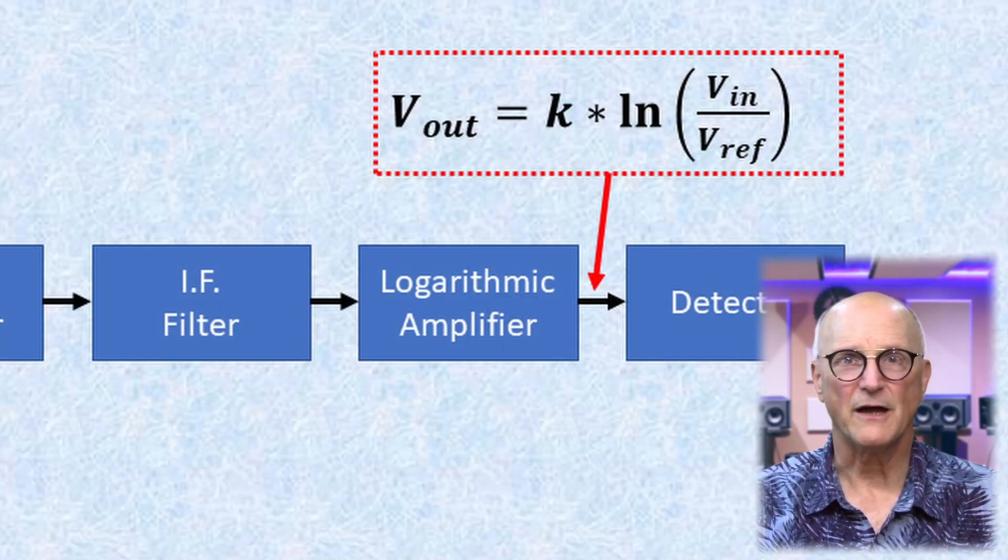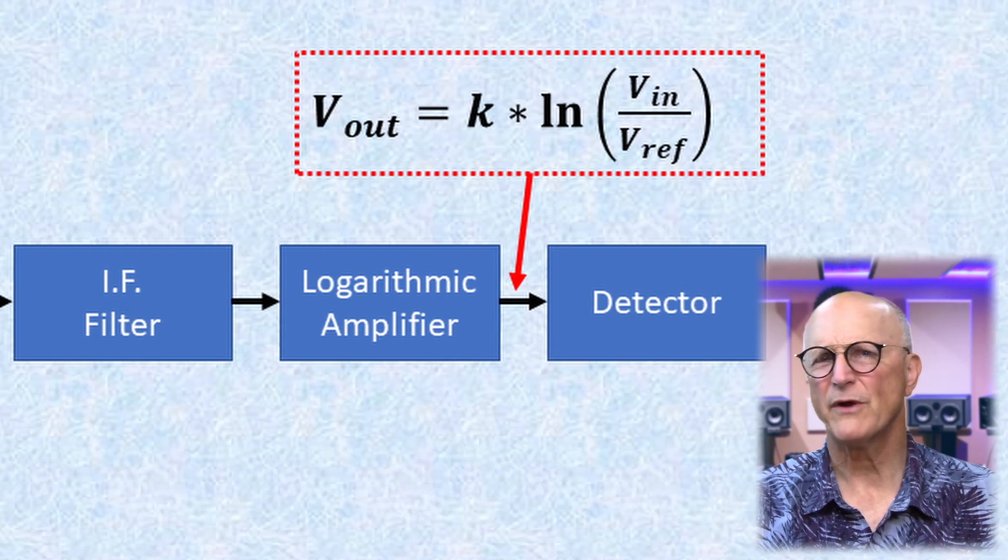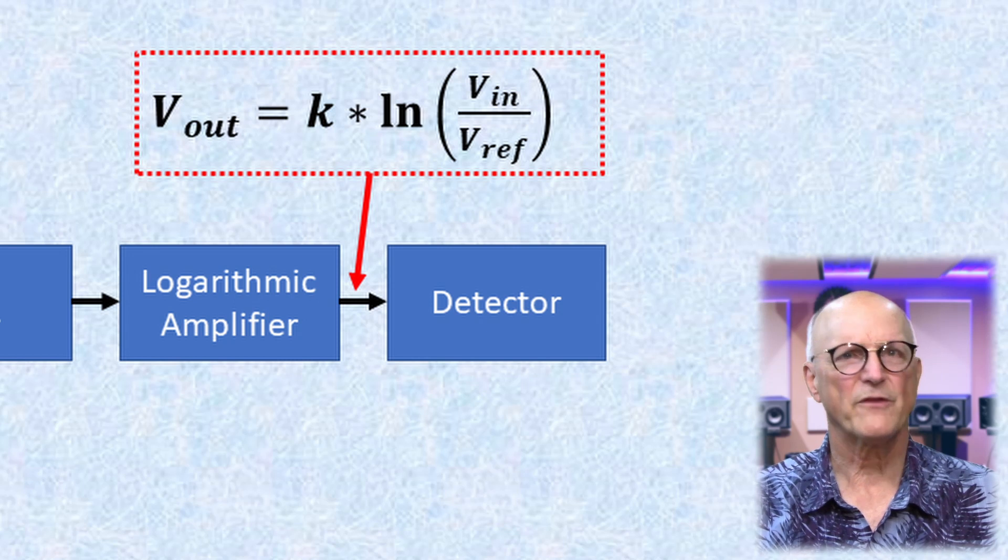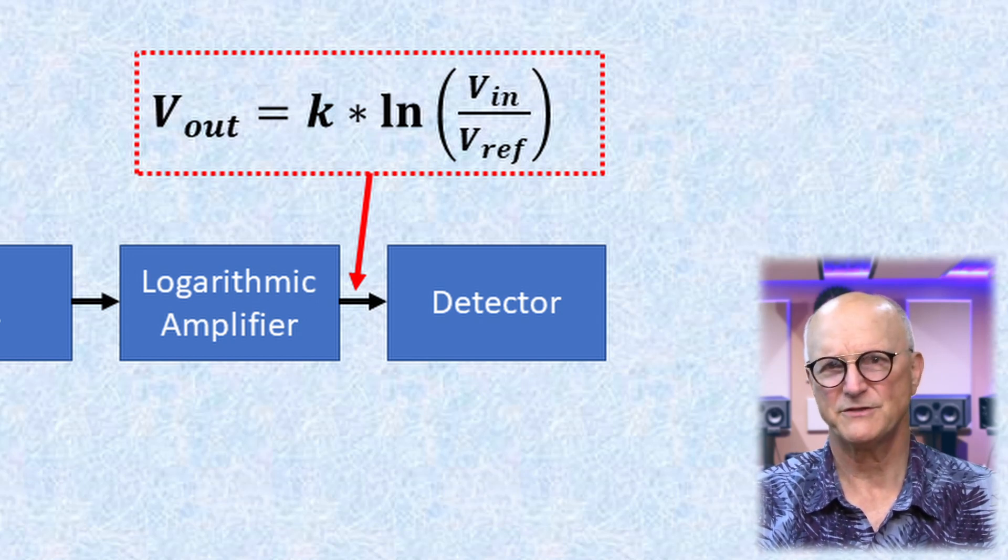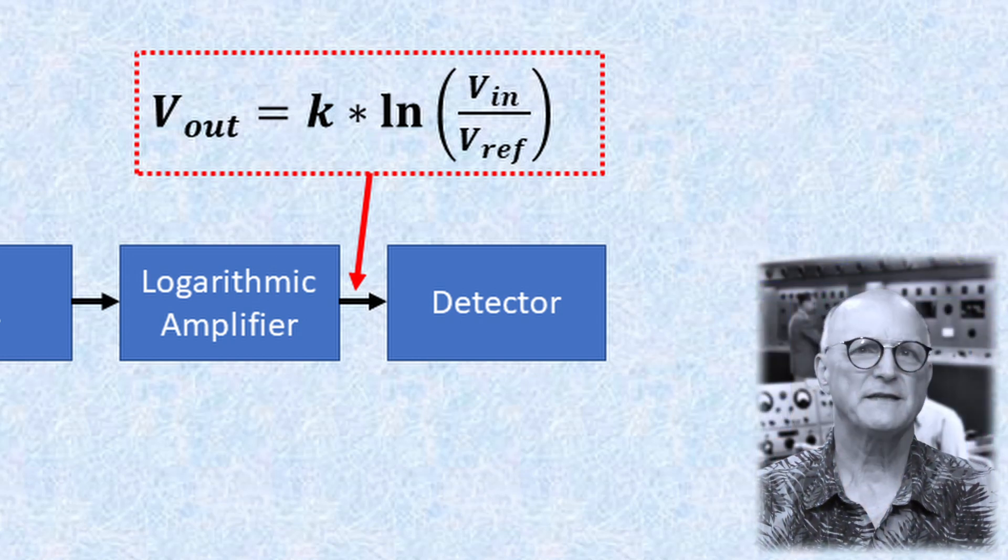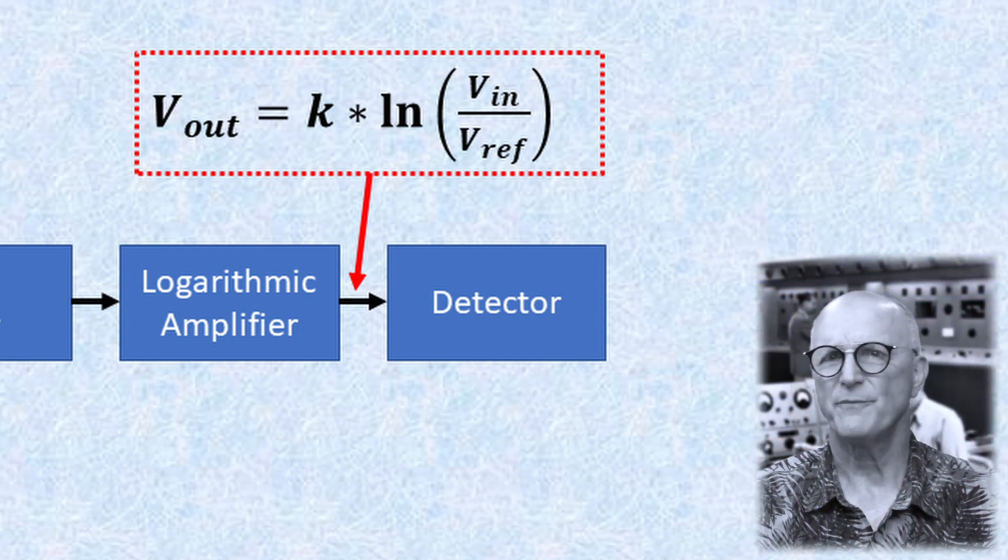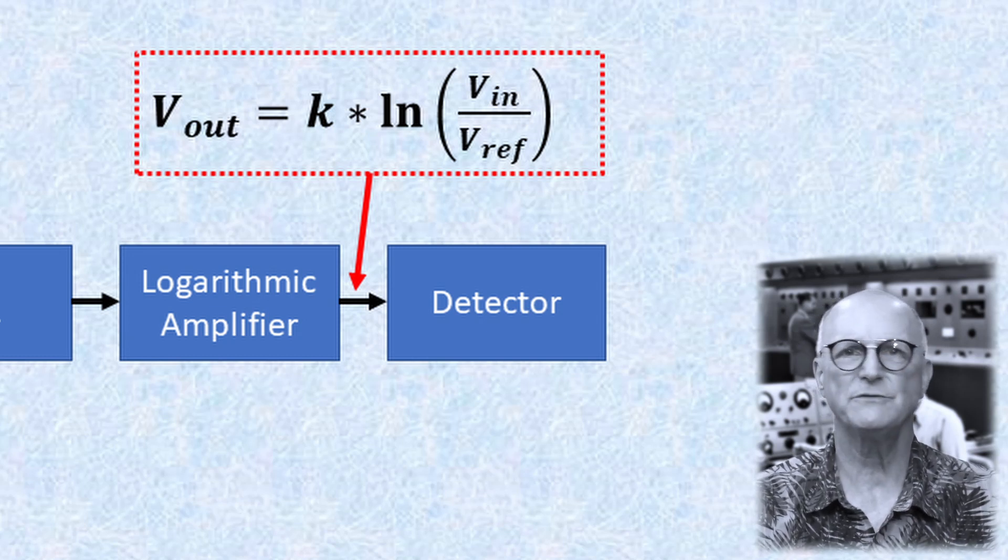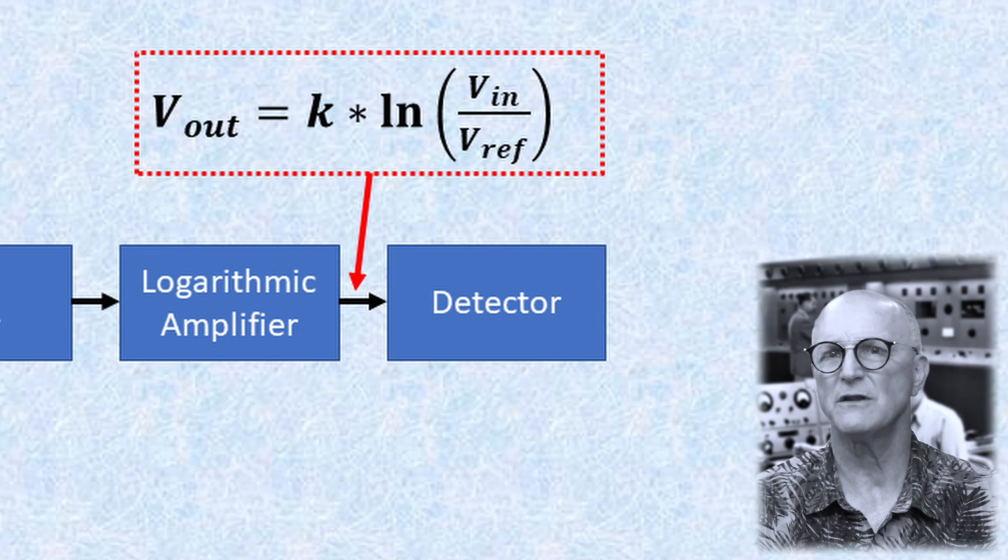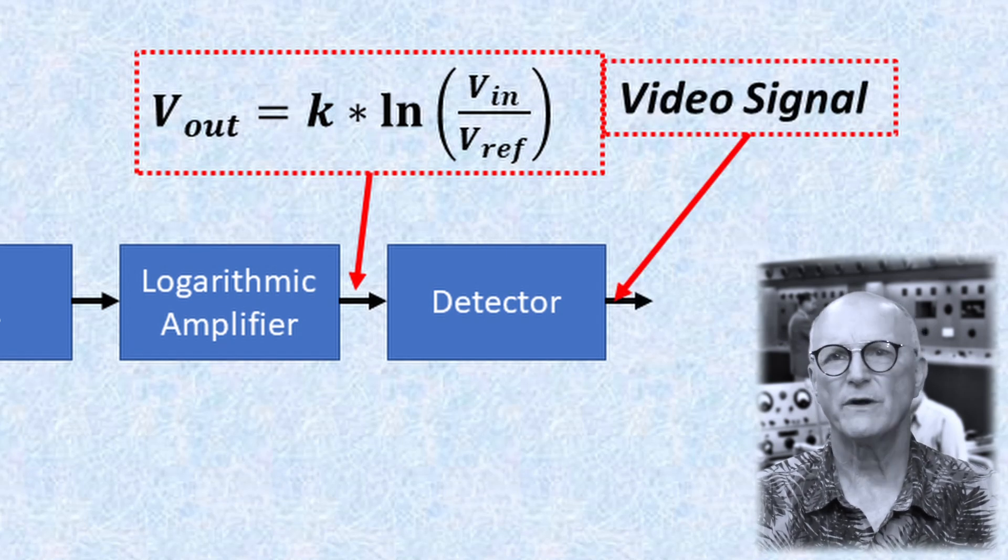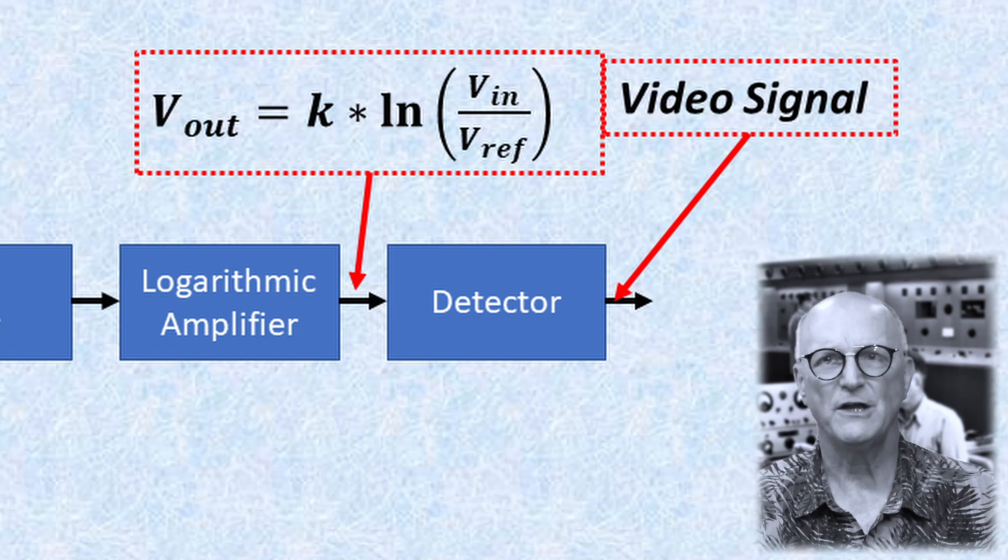In our spectrum analyzer, the next operational block in line is the detector, and this is where the modern spectrum analyzers and the older all-analog spectrum analyzers part ways. The detector in our analog spectrum analyzer is producing a voltage commensurate with the amplitude of the IF signal coming from the logarithmic amplifier. The output of the detector is what is referred to as the video signal.